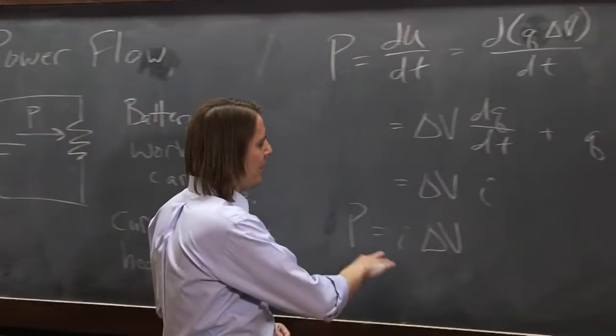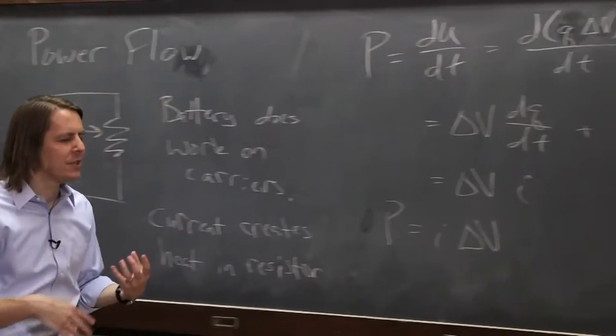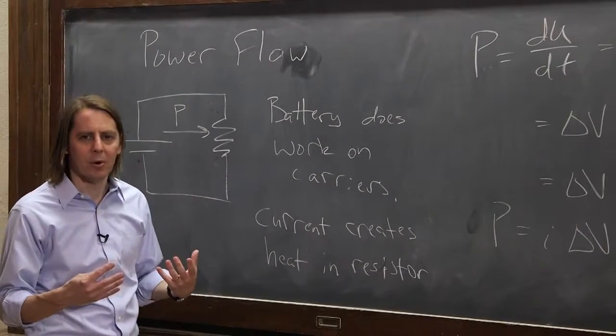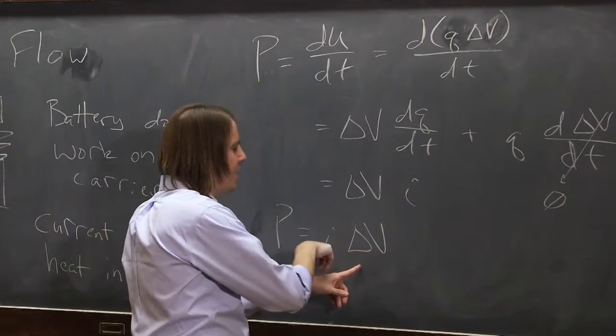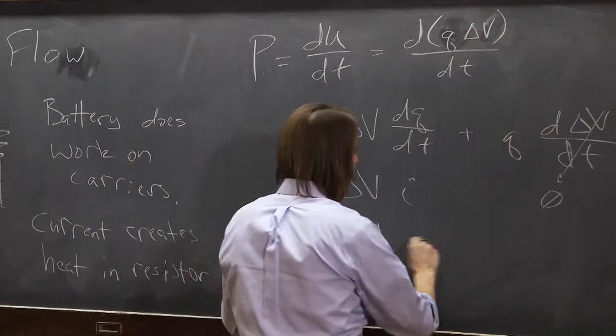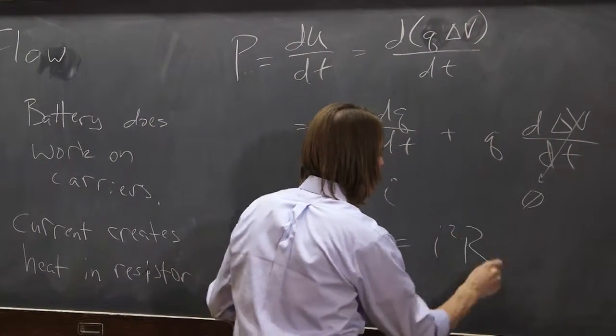Sometimes you see it written different ways. You might have a circuit where you just know the current, and you just know the resistance. You want to know the power. Well you could use v equals i r here, and that would be i times i times r. So p is also often written i squared times r.